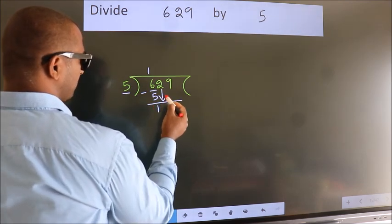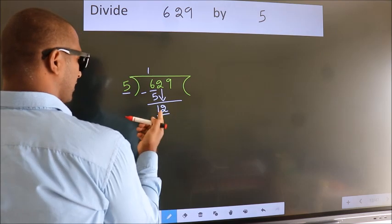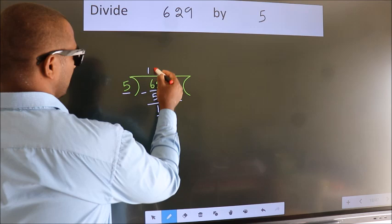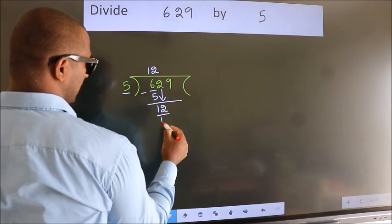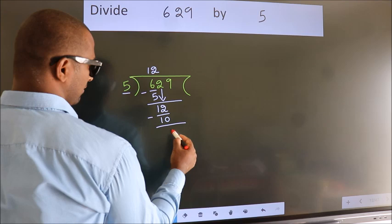Bring down the beside number. So, 2 down. So, 12. A number close to 12 in 5 table is 5, 2s, 10. Now, we subtract. We get 2.